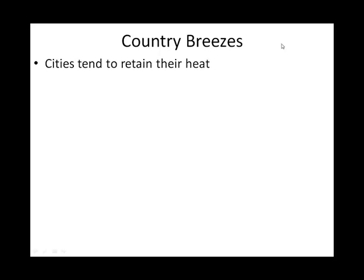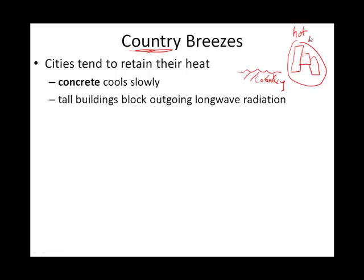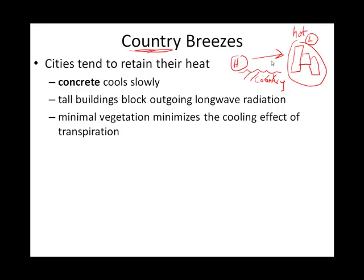The last one is called a country breeze. Since 'country' is before 'breeze,' it's coming from the country relative to the city. All the concrete in cities retains heat, so cities stay hot. Warm air tends to be relatively low pressure, so we have a higher pressure out in the country. That horizontal difference in pressures creates the country breeze — blowing from the country into the city.